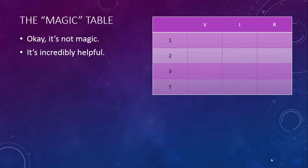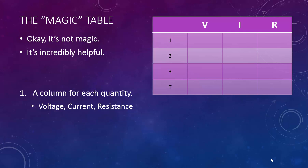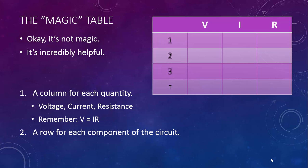Let's describe the table. There's a column for each quantity: voltage, current, and resistance — written in this order because V equals IR. There's a row for each component of the circuit. If there are three resistors, you have rows 1, 2, and 3. If there are two light bulbs, you have rows 1 and 2. If there are four electric motors, you have rows 1, 2, 3, and 4. Finally, there's a row for the circuit as a whole.